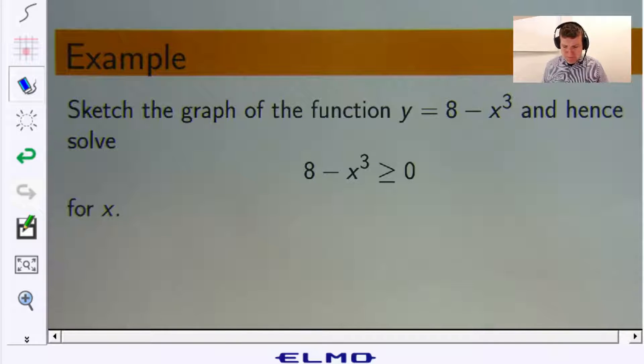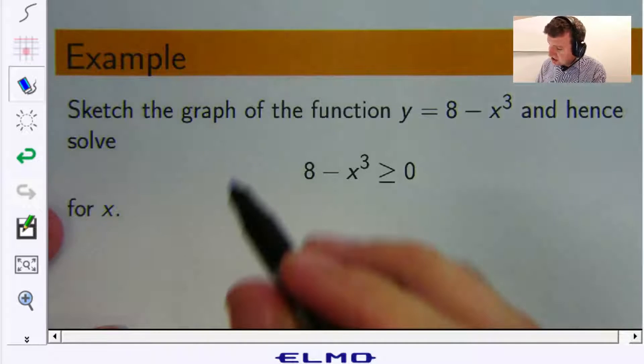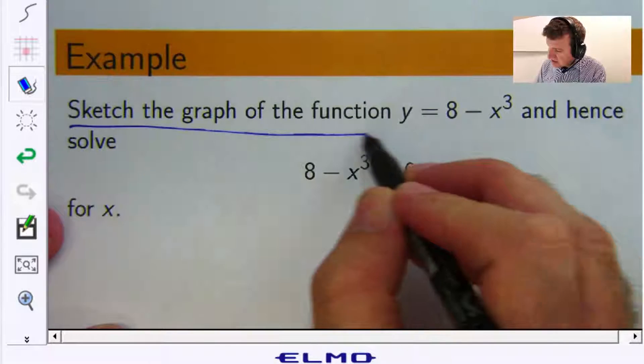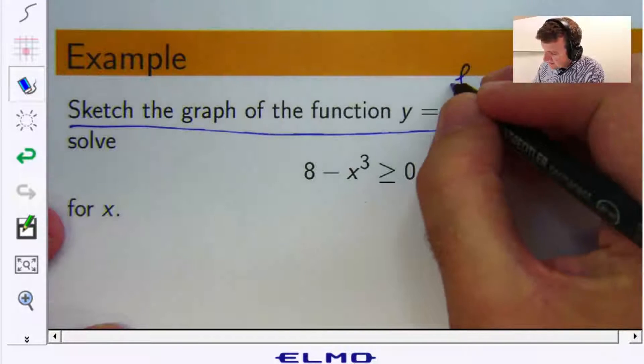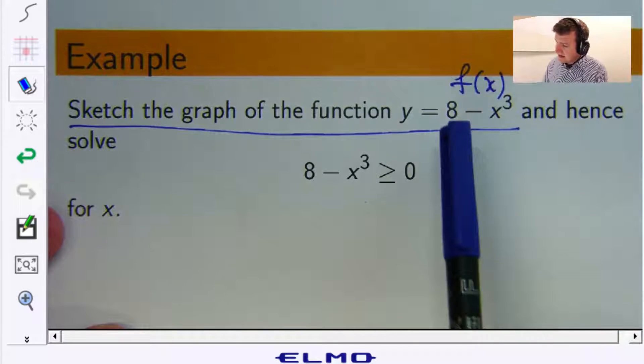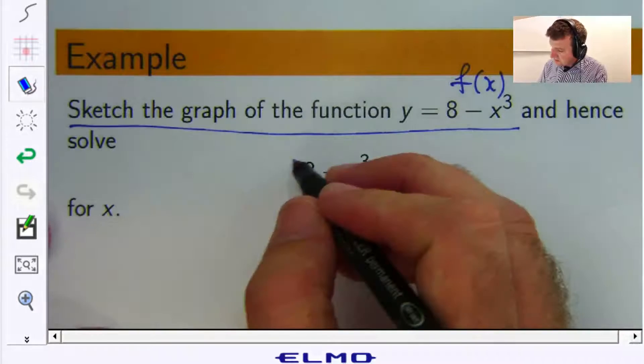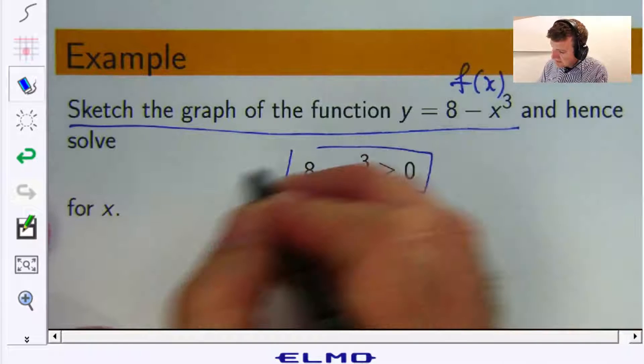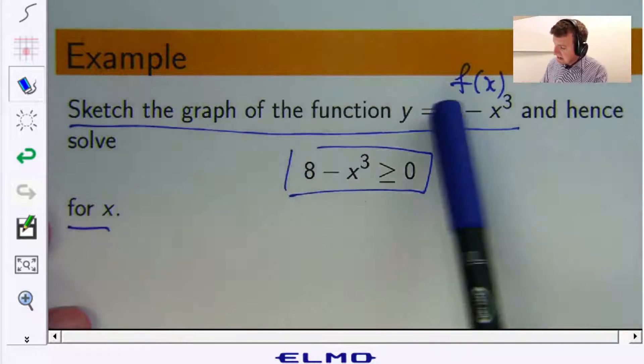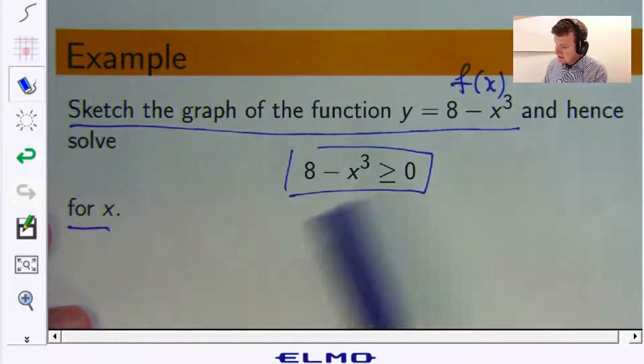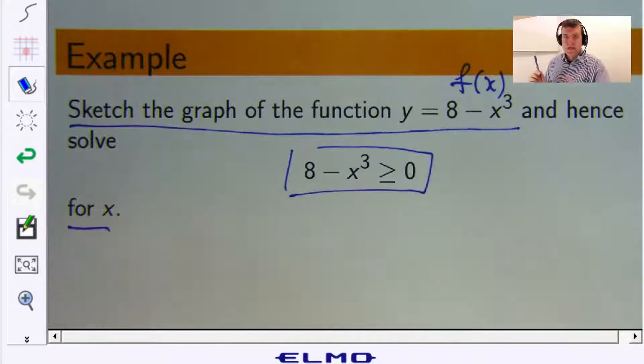So here is the example that we're going to talk about today. Sketch, it's a two-part problem, sketch the graph of this function so you can think of this as our function of x, 8 minus x cubed, and hence solve this inequality for x. So you can see we've got the same thing here and here. So basically we're asked to graph the function and then use that graph to solve an inequality.